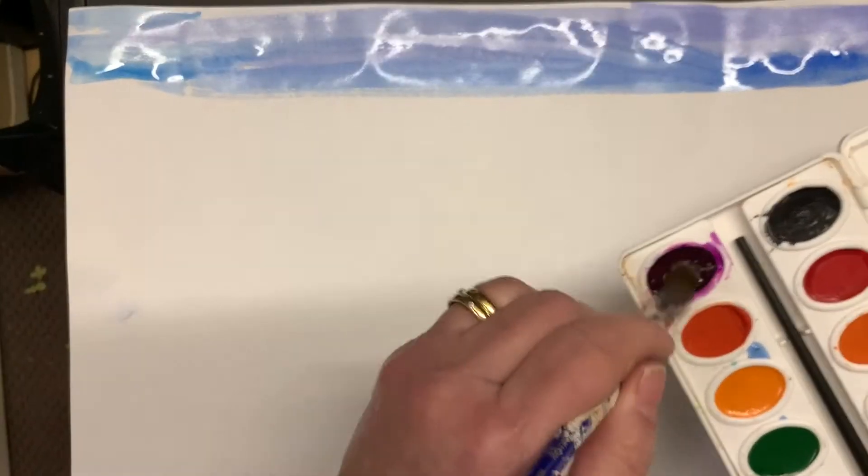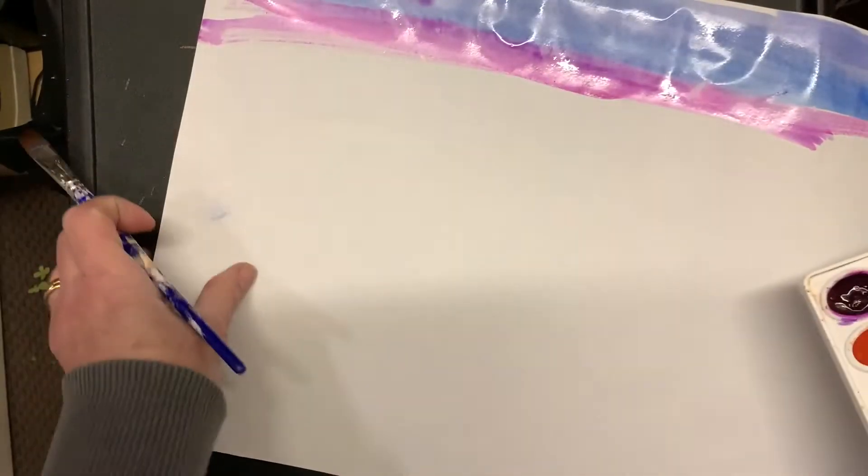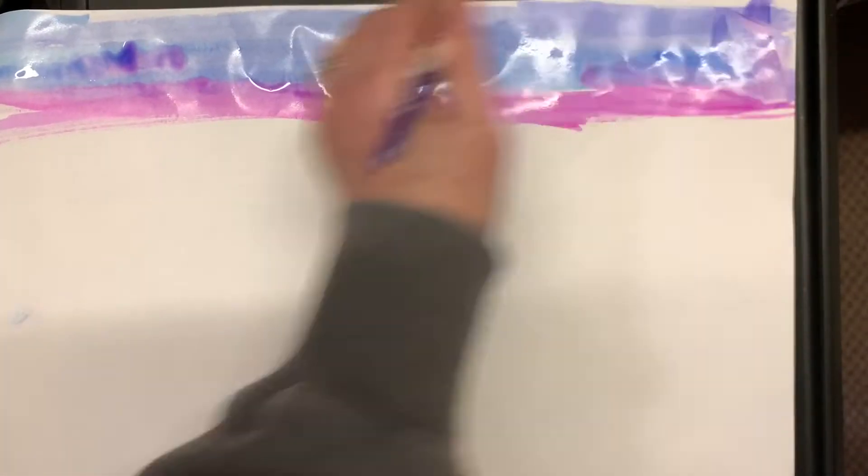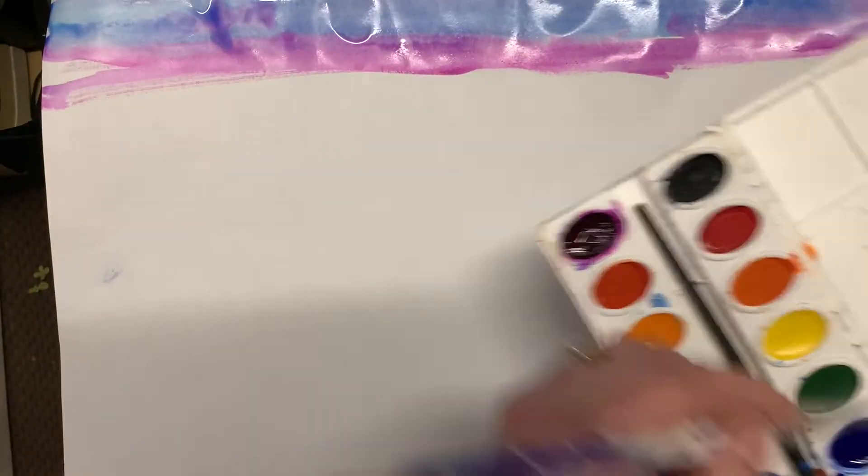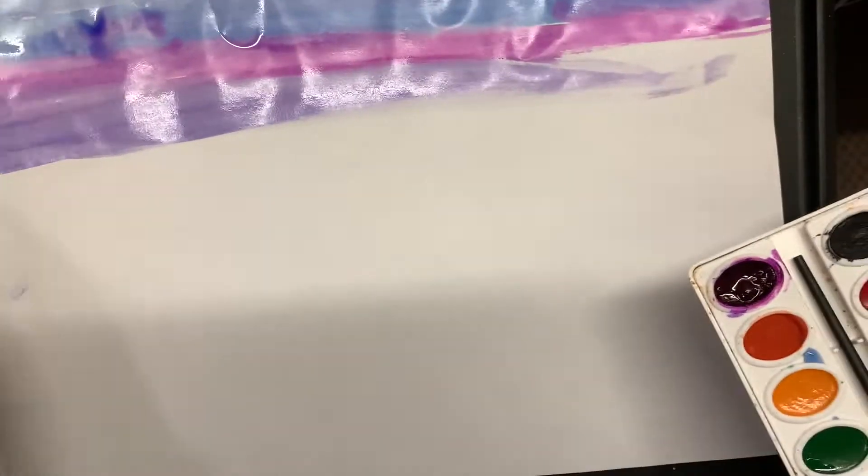I'm blending them on my paper, making long stripes going back and forth. Now it looks like I'm going very fast because my paper is sped up, but you're going to make horizontal lines going back and forth.